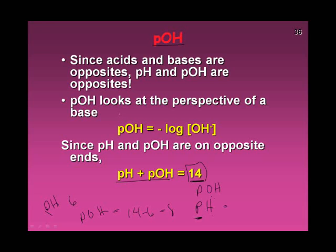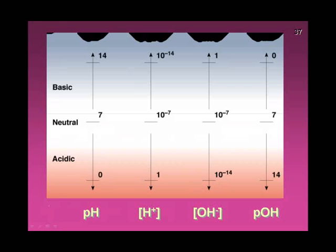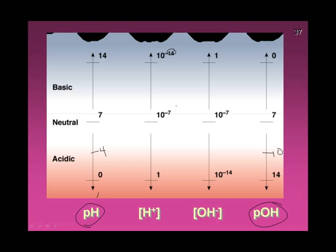Just like pH is the negative log of H+, pOH is the negative log of the OH− concentration. Looking at the two extremes: if pH is 14, pOH is 0; if pH is 7, pOH is 7; if pH is 4, pOH is 10 — they always add up to 14. The exponents also add up: 14 and 0, or 7 and 7, sum to 14.